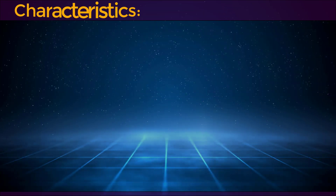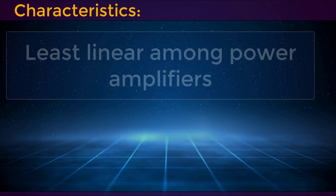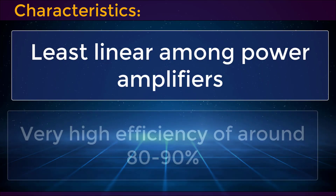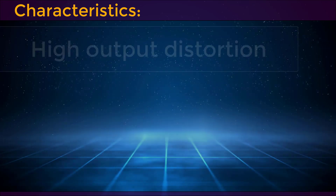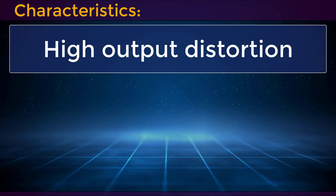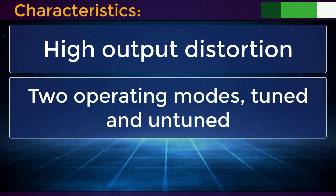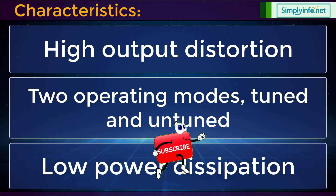Now let's look into the characteristics. Least linear among power amplifiers. Very high efficiency of around 80 to 90%. High output distortion. Two operating modes: tuned and untuned. Low power dissipation.